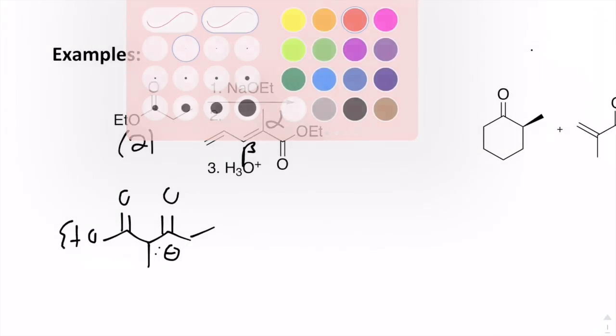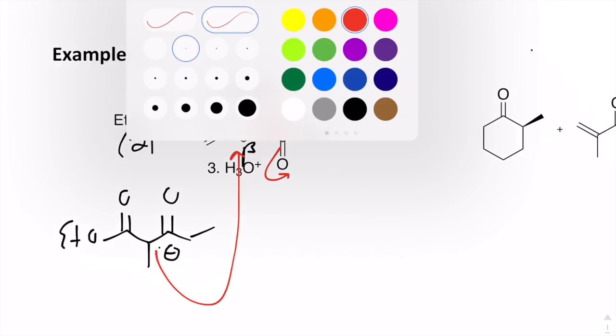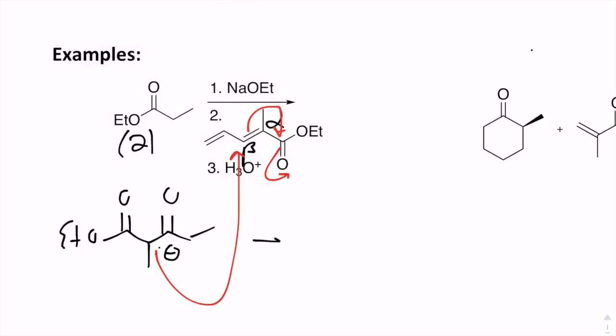So if I could rationalize those sets of mechanistic arrows, it's going to be from the enolate attacking at the beta position, pushing those pi electrons over, and then pushing them up on the carbonyl. So I'm just going to draw the product to this step. So if I want to count my carbons, it's one, two, three.